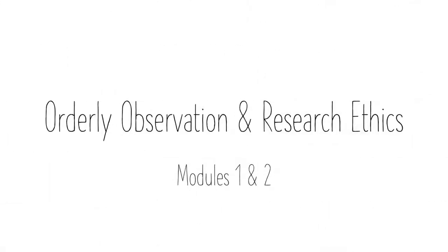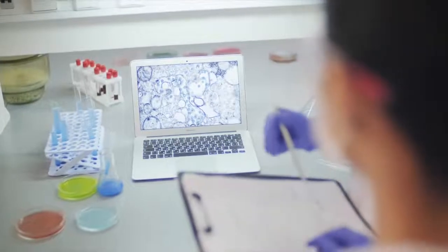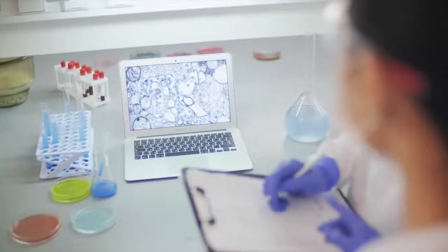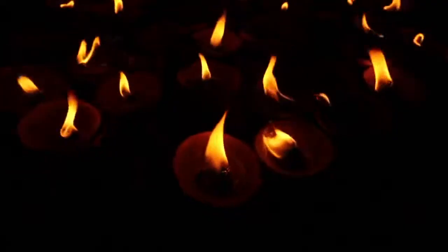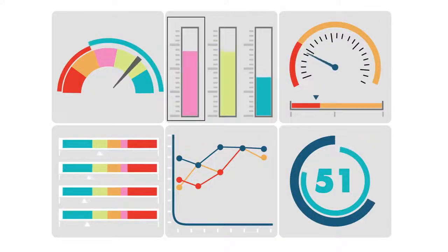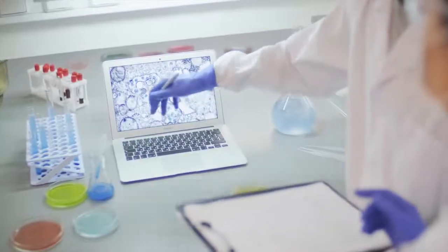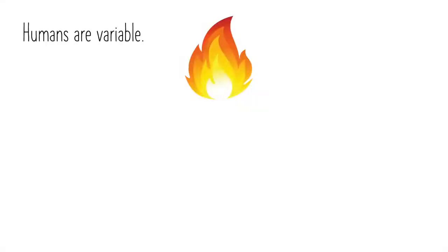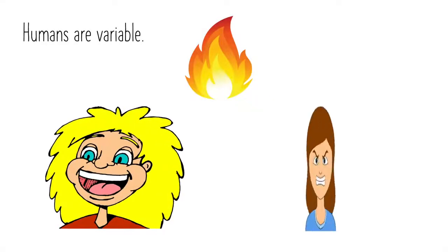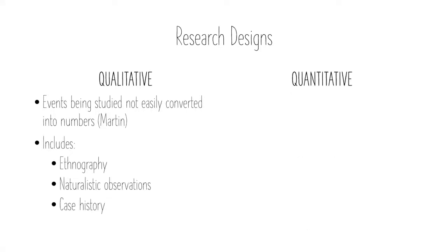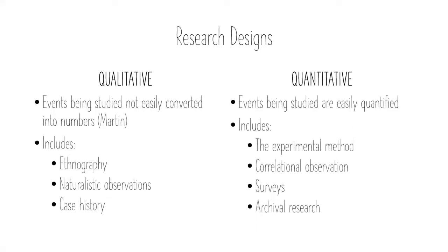When conducting research it is important to make sure you are doing so properly and ethically. When psychologists conduct research they are attempting to find links between circumstances, like being in a hot room, to behaviors like acting aggressively. At least one of the events being studied must be measurable. Another important thing for researchers to consider is that humans are variable — one person may react differently than another. Whether the design of your study be qualitative or quantitative, these are the most important things to consider when conducting research.